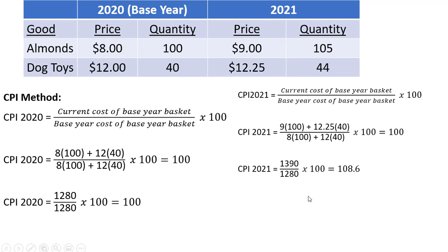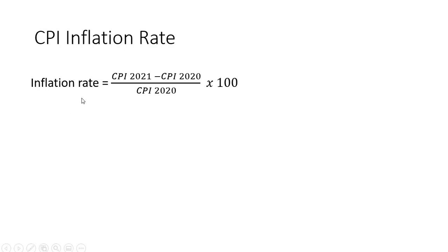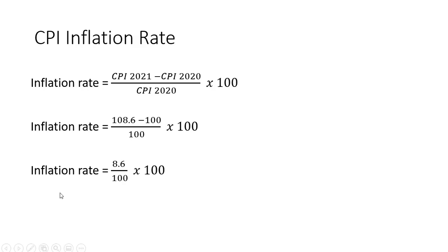We can calculate the inflation rate by looking at the percentage change going from 100 to 108.6. Using the percentage change formula and plugging in our CPI values, we get an inflation rate slightly different from the GDP deflator method. Using the CPI, the inflation rate is 8.6%. Okay, I'll stop here.